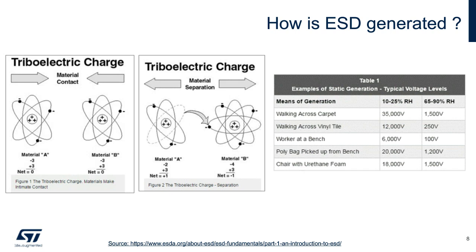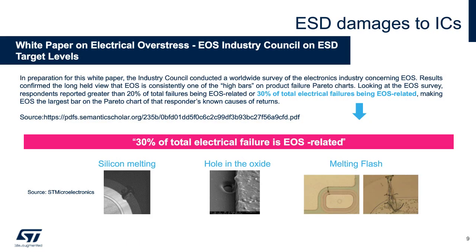Electrostatic discharge will cause potential failures on the integrated circuits of your PCB. These failures are called electrical overstress, or EOS, resulting in silicon melting, oxide punch-through, junction damage, metallization damage or degradation, affecting the long-term reliability of your electronic system. A survey from the EOS Industry Council shows that 30% of customer claims are due to ESD or EOS. Furthermore, the miniaturization of components is increasing the integrated circuit sensitivity to ESD.